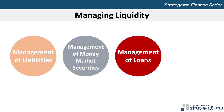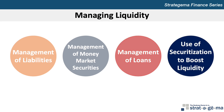When the secondary market for loans is relatively active, banks can attempt to satisfy their liquidity needs with a higher proportion of loans while striving for higher profitability. However, loans are not as liquid as money market securities. Banks may be unable to sell their loans when economic conditions weaken, because many other banks may be attempting to sell their own loans at the same time, and very few financial institutions will be willing to purchase loans under those conditions. The ability to securitize assets, such as automobile and mortgage loans, can enhance a bank's liquidity position.